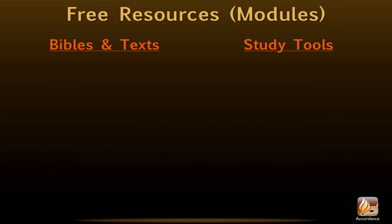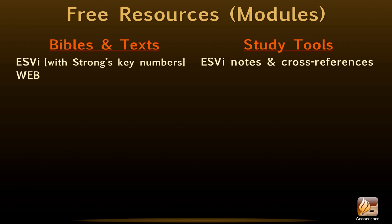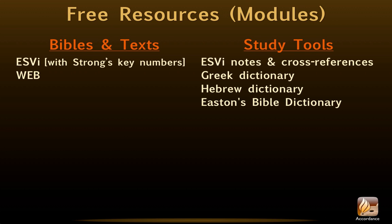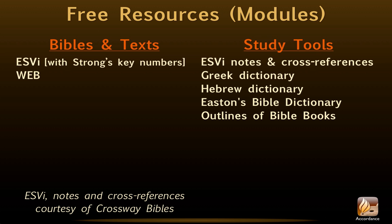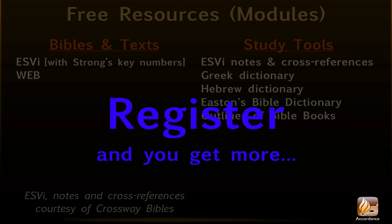The initial download includes two Bible translations: the English Standard Version iOS Edition and the World English Bible. Five study tools are also included: the ESV Notes and Cross References, which are actually two separate modules, a Greek and a Hebrew Dictionary, Easton's Bible Dictionary, and Outlines of Bible Books. We'd like to publicly express our appreciation to Crossway Bibles for their complimentary copy of the ESV Translation, along with its margin notes and cross-references. Register your software, and you get even more.